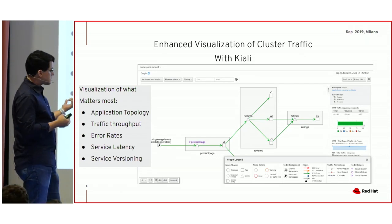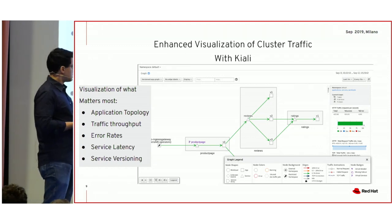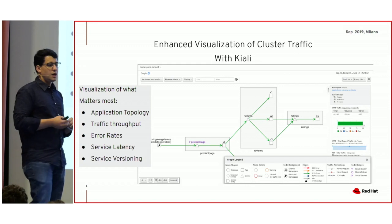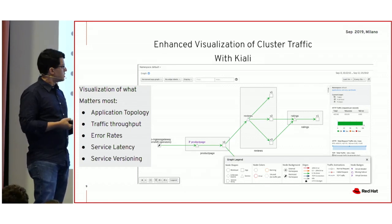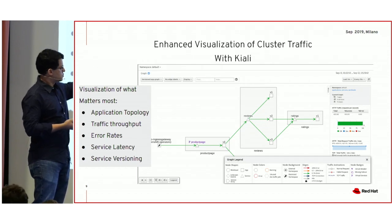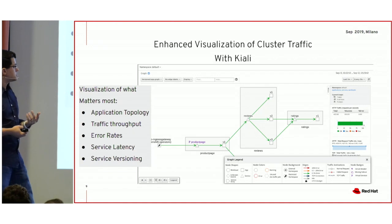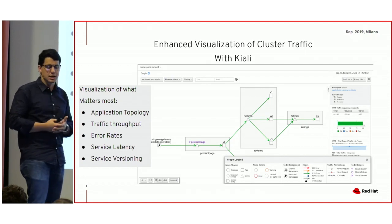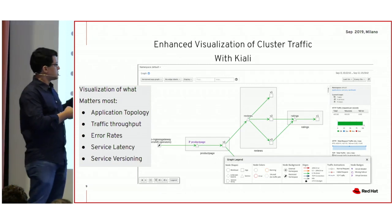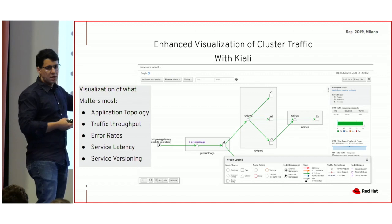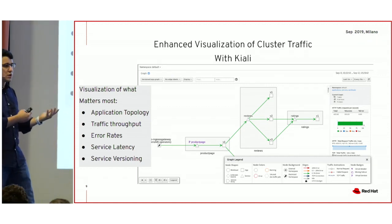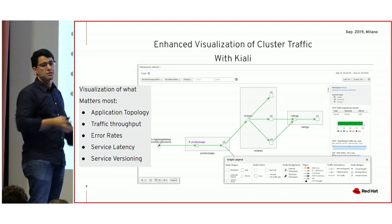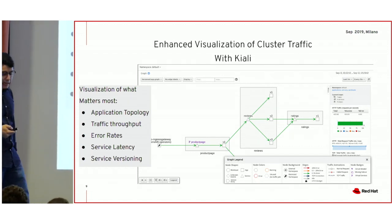Another nice thing you can see is the latency between the communication of those services. Maybe you have three different versions of your reviews service — you shipped v3 and start noticing some latency. From this same view, you can add weights to those lines, see that the latency for that call is higher than the previous version. Now you have a regression. Because you are using the service mesh, you can reshape the traffic and send everything to v2 and v1 while you fix v3 and release v4 with the latency fix. That's a canonical example of what you can do with service mesh and how Kiali helps.